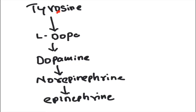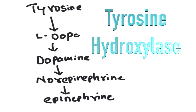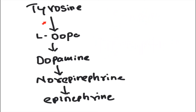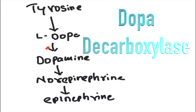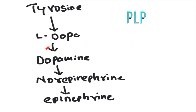In neuronal tissue, tyrosine is converted into L-DOPA and this is done by tyrosine hydroxylase enzyme, which needs tetrahydrobiopterin — very similar to phenylalanine hydroxylase enzyme. The L-DOPA is then converted into dopamine by DOPA decarboxylase enzyme, which needs pyridoxal phosphate.